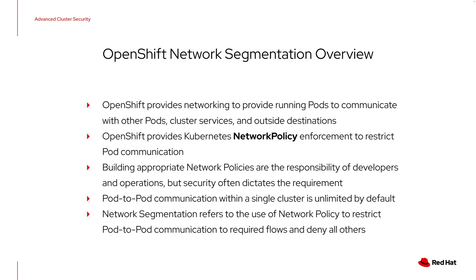Let's talk a little bit about network segmentation. In OpenShift, the platform itself provides the networking to allow running pods to communicate with other pods in the cluster or with outside destinations. OpenShift provides Kubernetes network policy enforcement that can restrict pod communications. Building these network policy objects is the responsibility of application teams — developers and operations folks — but it's often security teams that dictate the requirement that these network policies be implemented. Pod-to-pod communication within a cluster is unlimited and wide open by default, with no network policies restricting this traffic. Network segmentation is the use of these network policies to restrict pod-to-pod communication — limiting pods to required flows and denying all others.